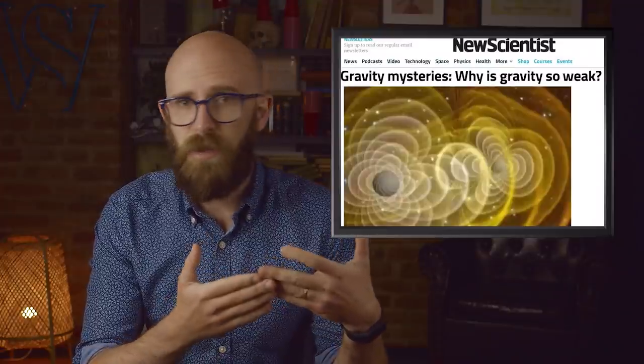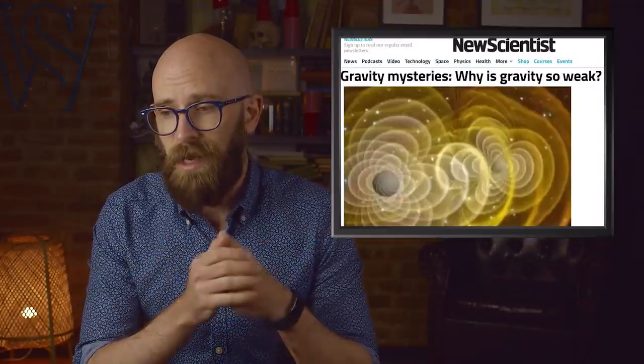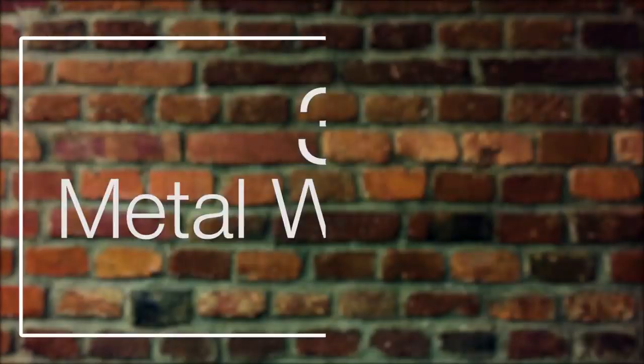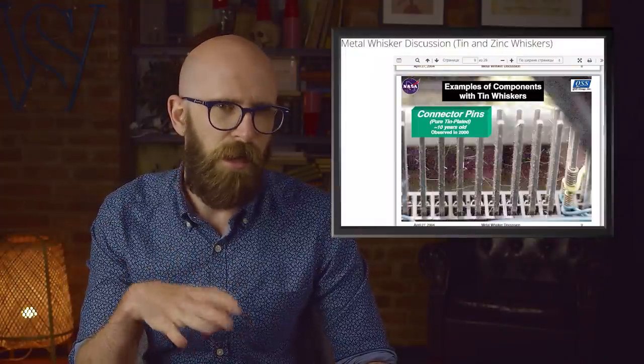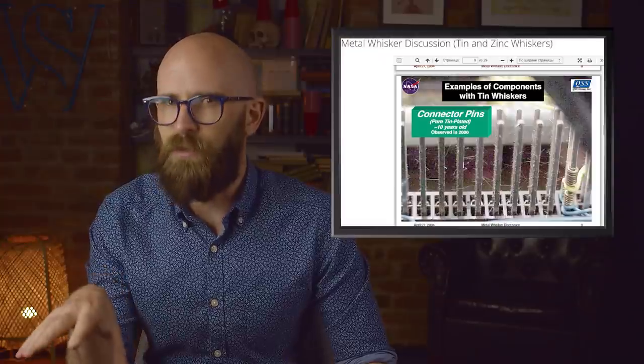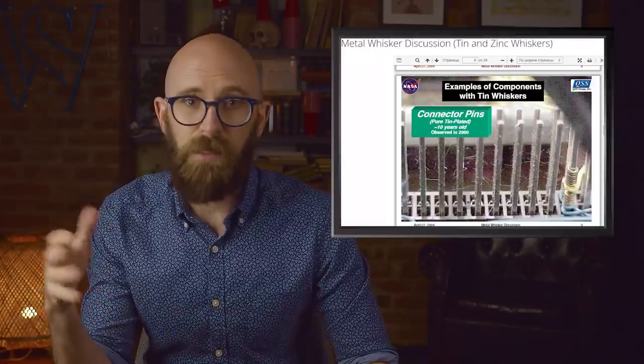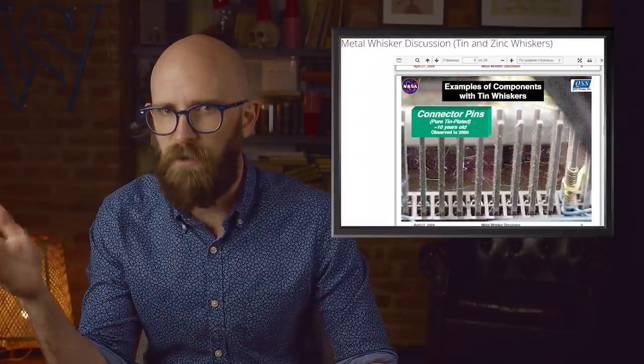Number 3: Metal whiskers. There's a mysterious problem happening in machines all around the world that most of us never notice. Metal has a habit of forming whiskers - tiny little metallic filaments that can be hundreds of times thinner than a human hair and seem to grow out of metal itself. They've haunted electronics for decades, and so far no one actually knows where they come from.